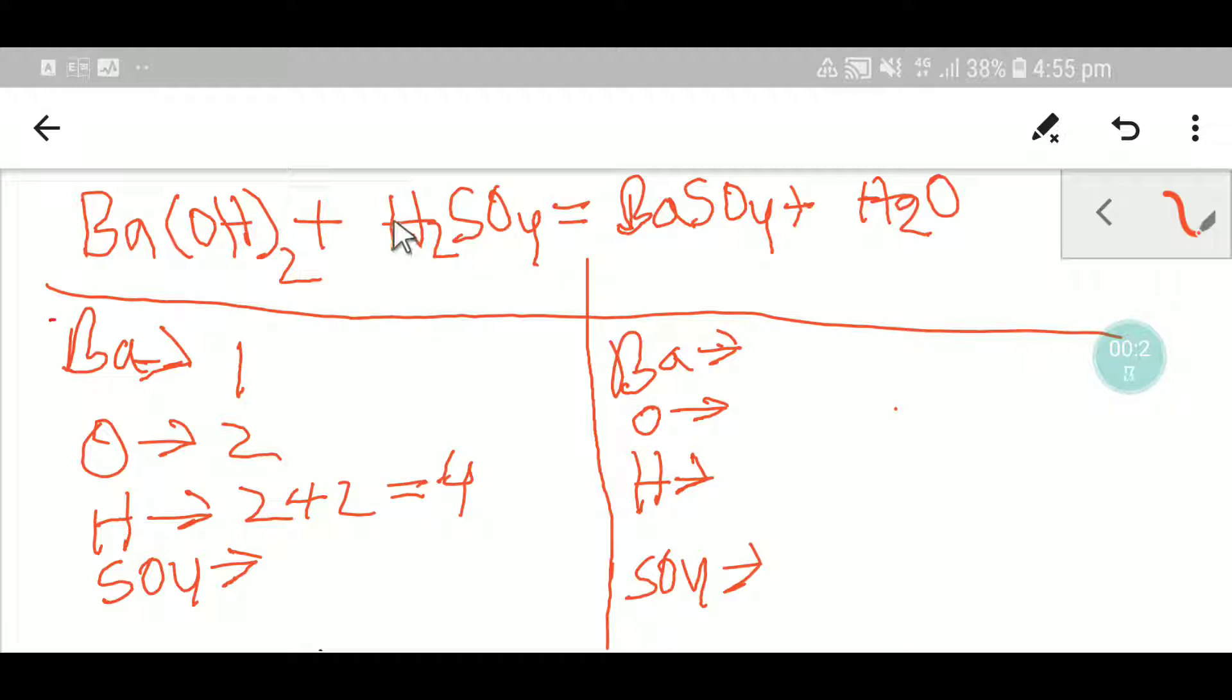We have one sulfate on the left. On the right hand side we have one barium, one sulfate radical, two hydrogen, and one oxygen.